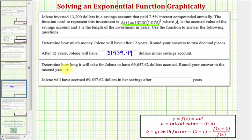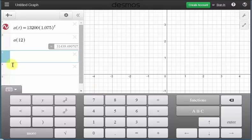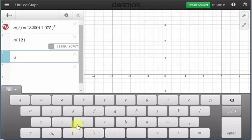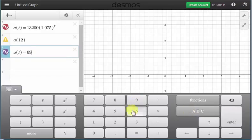Now to determine how long it will take the account balance to reach this amount, we'll also graph A(t) equals this constant, then determine the point of intersection. And that's very easy to do using Desmos. So we'll press enter, and in number three we'll enter A(t) equals 69,657.62. Let's go back to our letters, A(t) equals, back to our numbers, 69,657.62. Now let's close the keypad.